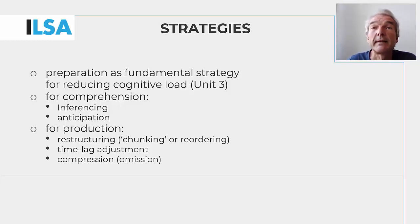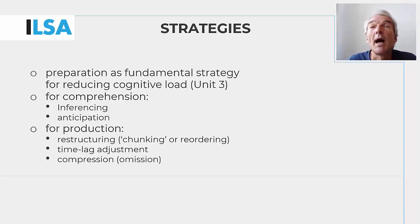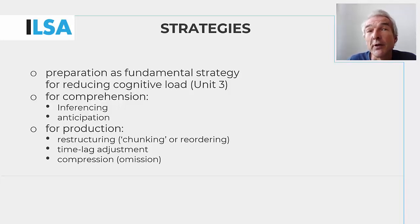When there is a hint that unfamiliar names, numbers, or lists of items will be mentioned, reducing one's time lag to a minimum will make it possible to repeat or transcode the input. Otherwise, such strategies as generalization or approximation may have to be employed. Conversely, when it is unclear where an impromptu speaker is going, a longer time lag is needed to grasp ideas and turn them into coherent output. When input speed and information density are very high, strategic compression or even omission can help retain the core of the message at the expense of some details or presumably secondary information.